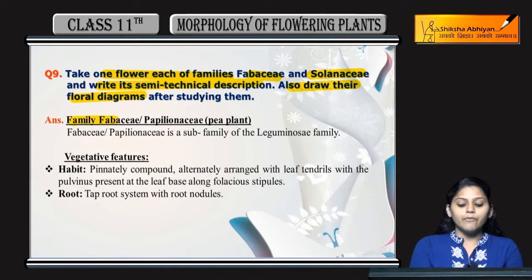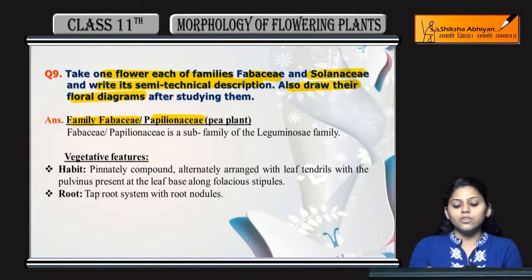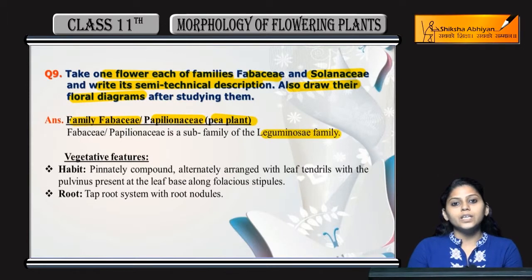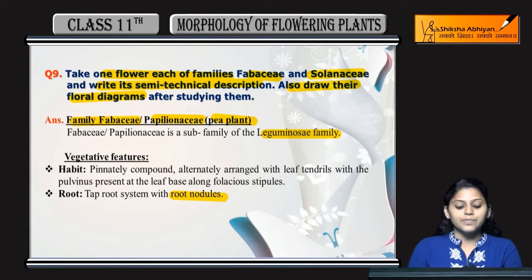First of all, the family Fabaceae, such as Papilionaceae, that is of the pea plant. It is a sub-family of the Leguminosae family. The Leguminosae family has root nodules present. Now let's look at vegetative features.